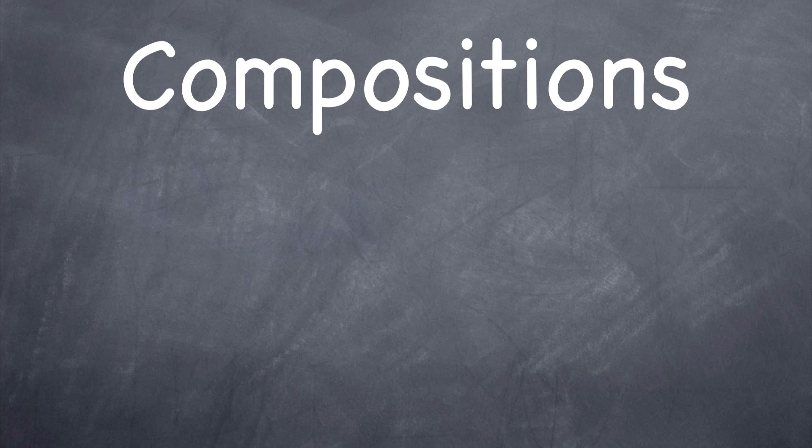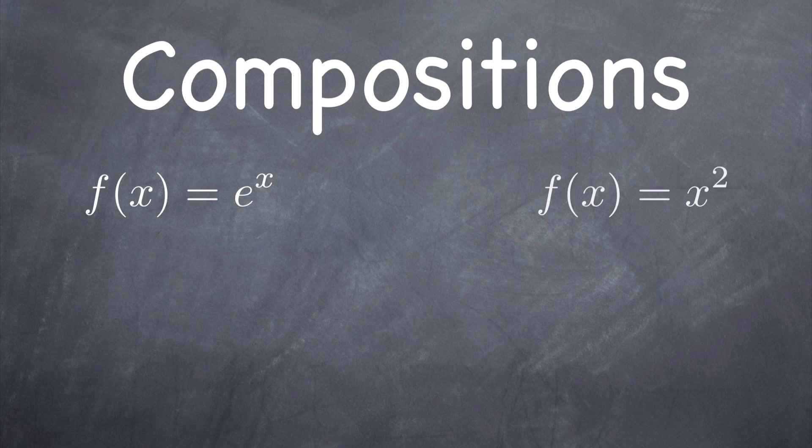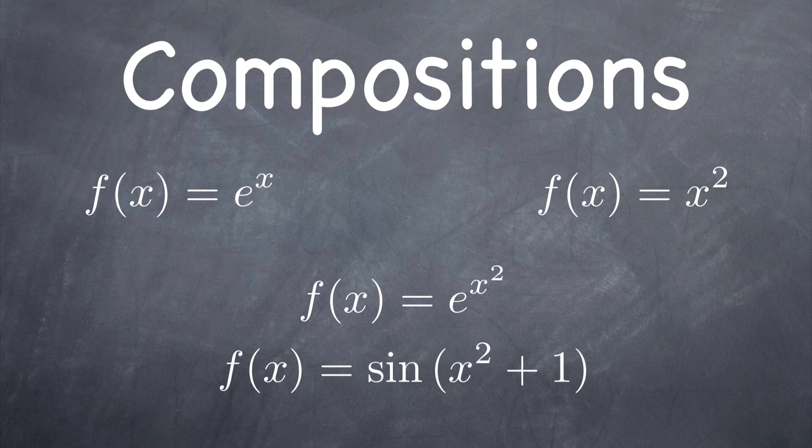Functions can also be compositions of other functions where one function is nested inside another. For example, e to the x is a function, and x squared is a function. e to the x squared is a composition of functions where x squared is nested inside e to the x. Sine of x squared plus one is another good example of a composition of functions.